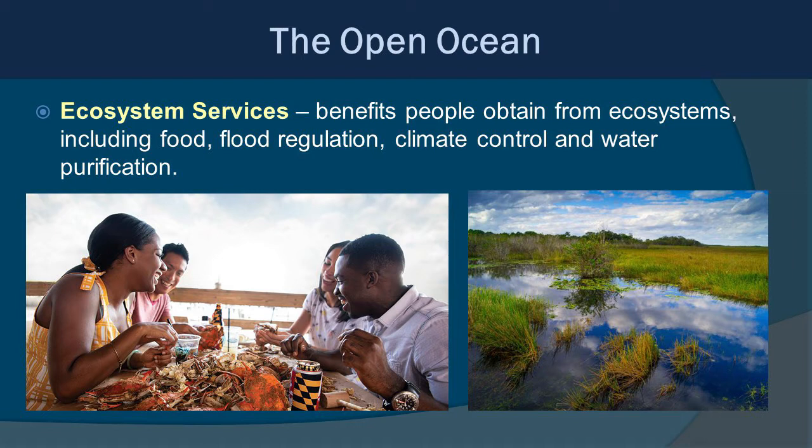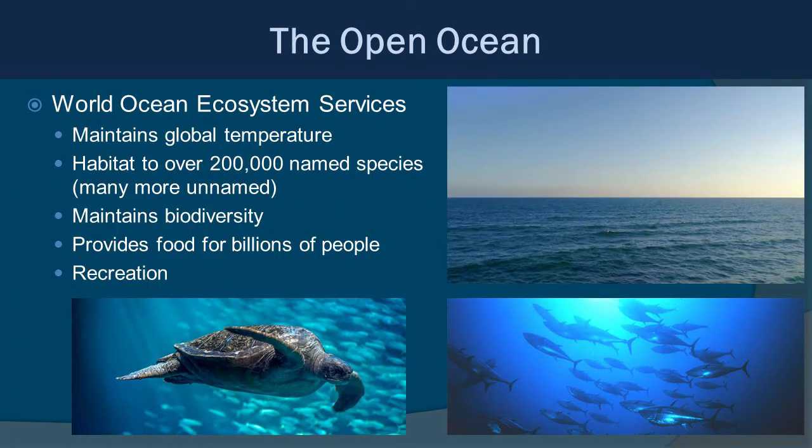This brings us to an important term: ecosystem services. This is essentially the benefits people obtain from ecosystems, including food, flood regulation, climate control, and water purification. The open ocean has quite a lot of ecosystem services. It maintains global temperature, it's habitat to over 200,000 named species — many more might be unnamed — it maintains biodiversity, provides food for billions of people, and recreation as well. The world's oceans are a huge part of our lives.